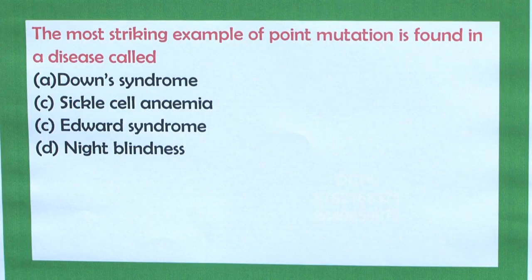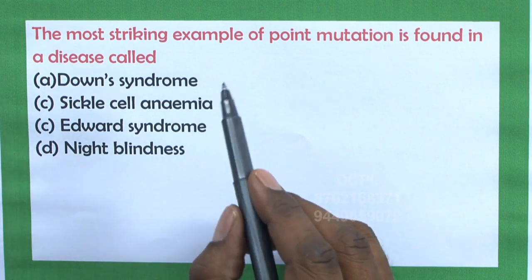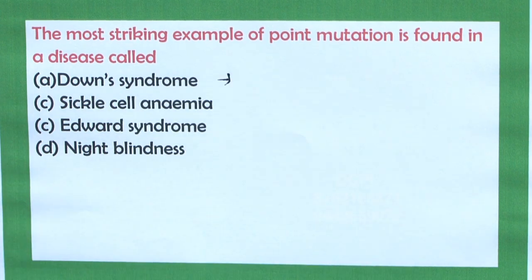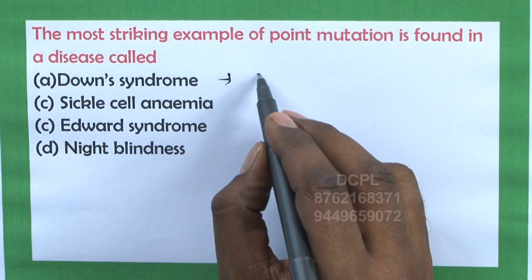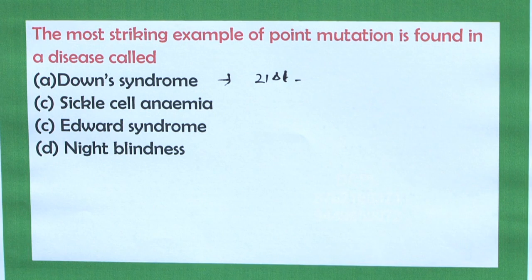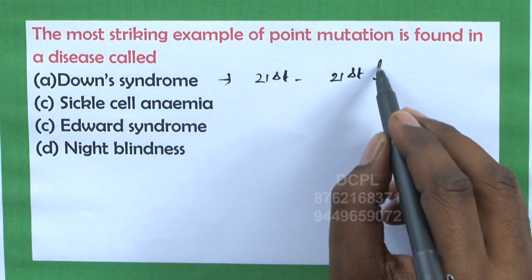Dear students, let us see one more question: the most striking example of point mutation is found in a disease called... Option A is Down syndrome. As you already know, Down syndrome is a chromosomal disorder wherein the 21st pair of autosomes will have an extra chromosome — it is called 21st trisomy.